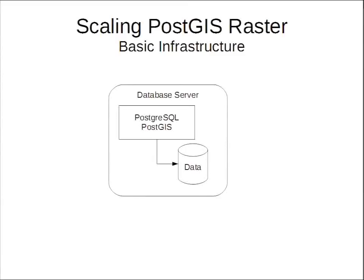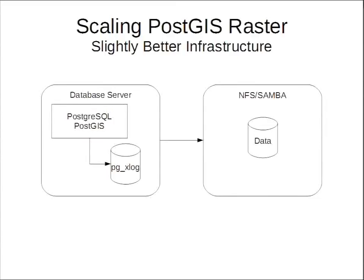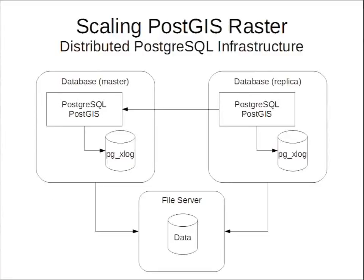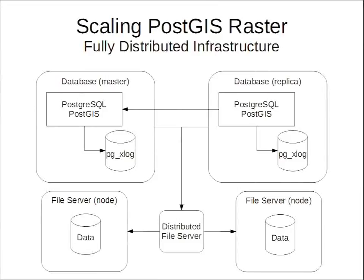The basic setup is self-contained but is a single point of failure. So I updated it to separate where data management happens from where data sits. But that still has single points of failure, so the next step is a master-replica system — I can throw on as many replicas as I need for read requests. The final step is adding a distributed file system like GlusterFS or Lustre, something fully scalable and redundant, with a whole set of Postgres servers in front. Then I can scale with demand as it grows.